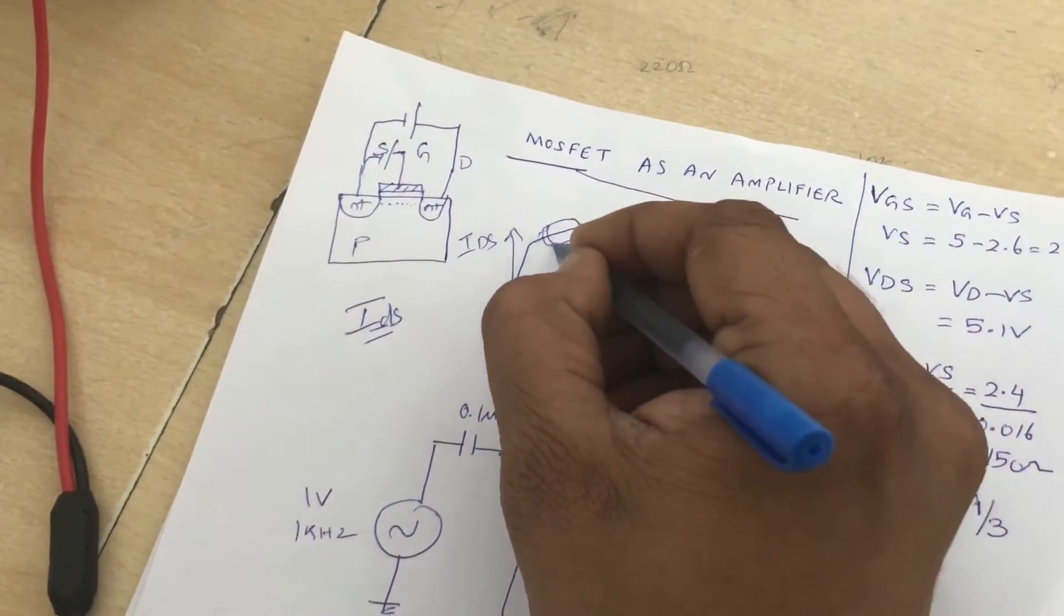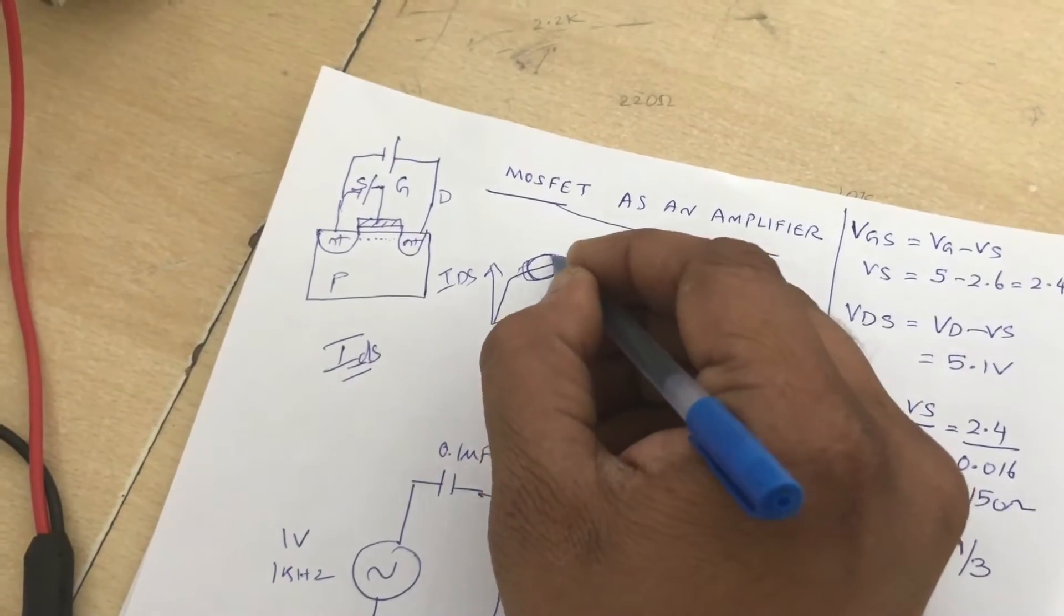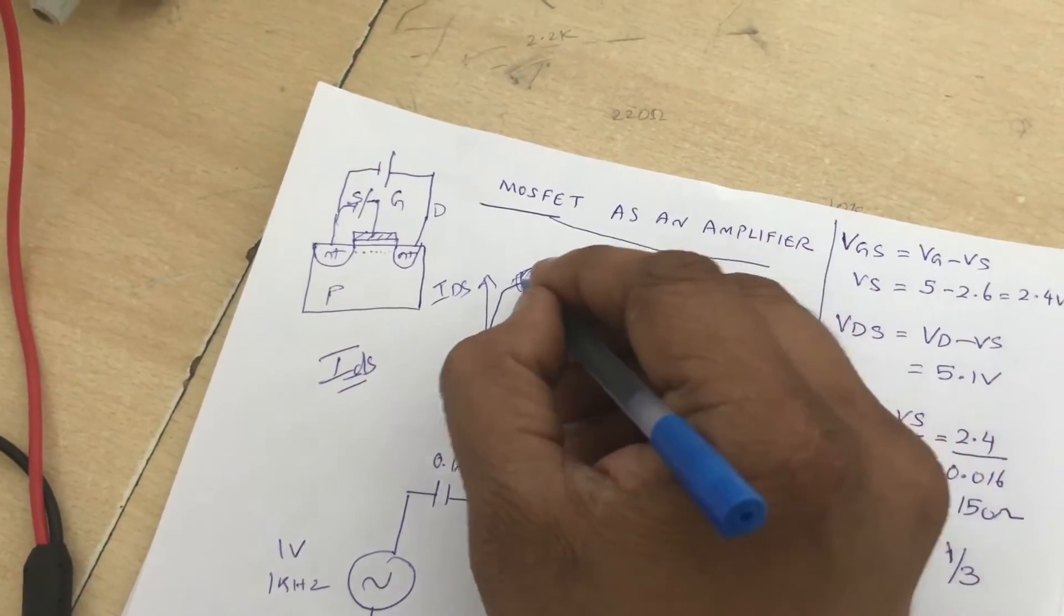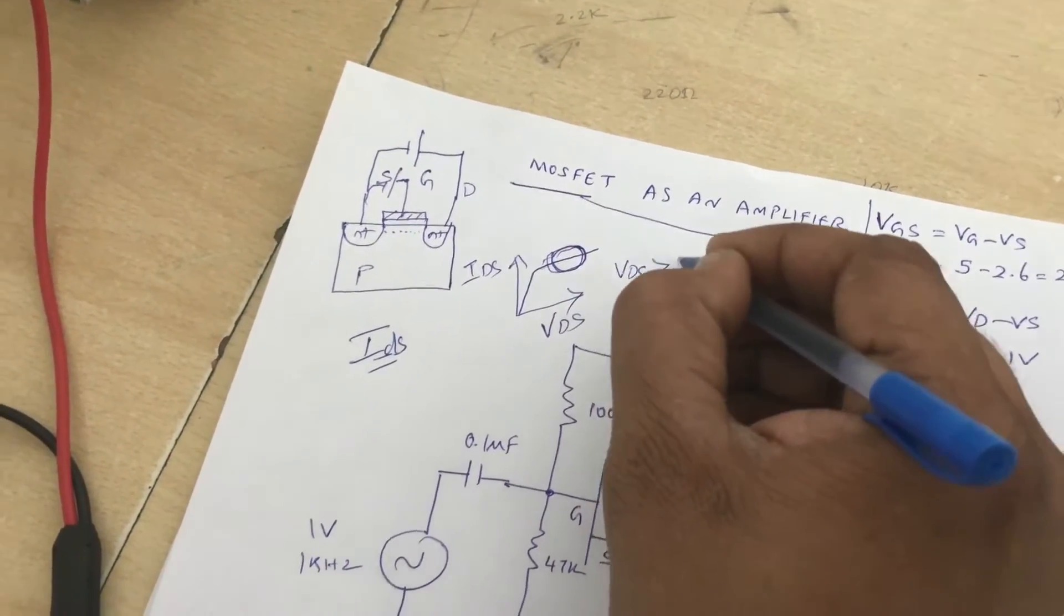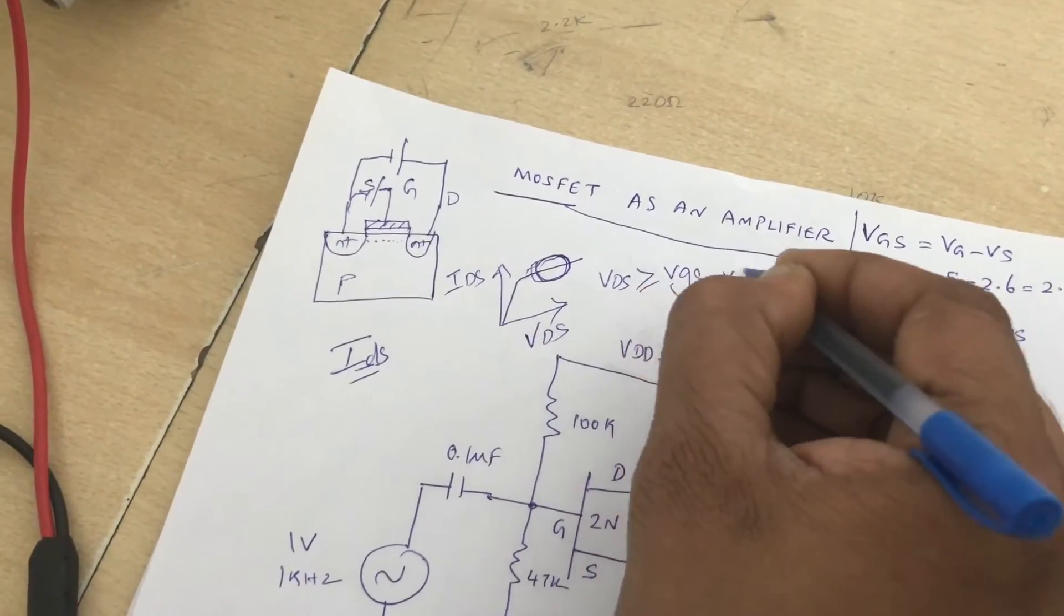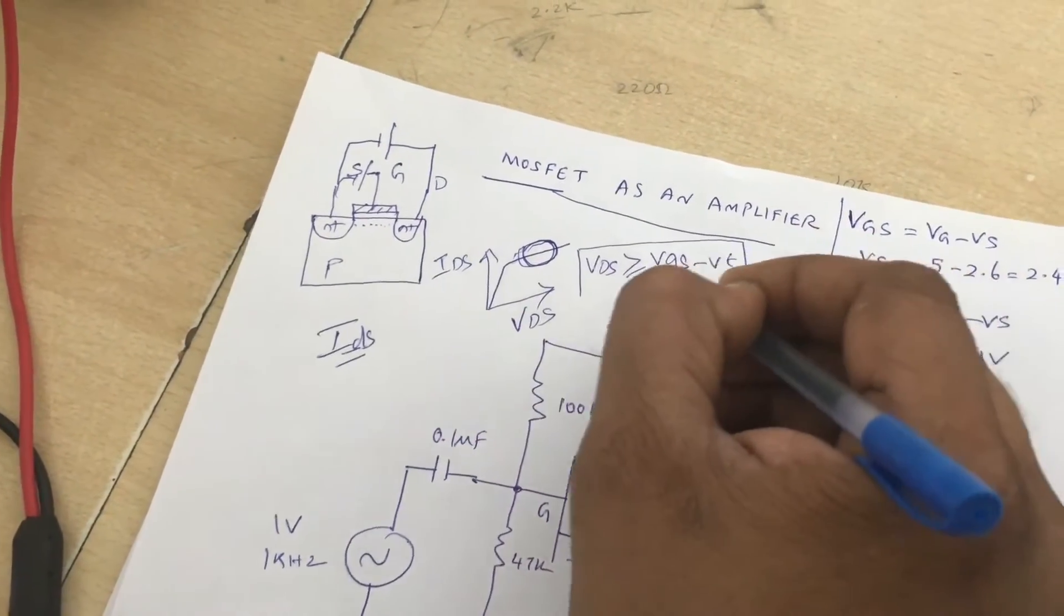If you take in this region, VDS will be much greater than or equal to VGS minus VT, so we need to ensure that VDS is greater than or equal to VGS minus VT.